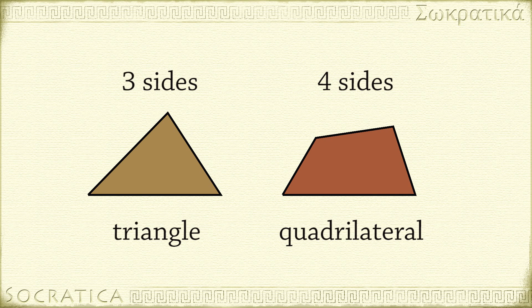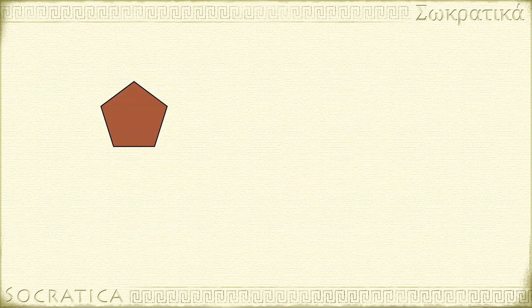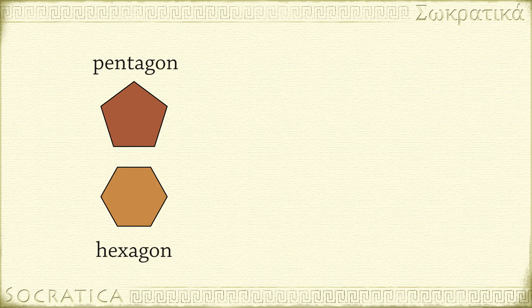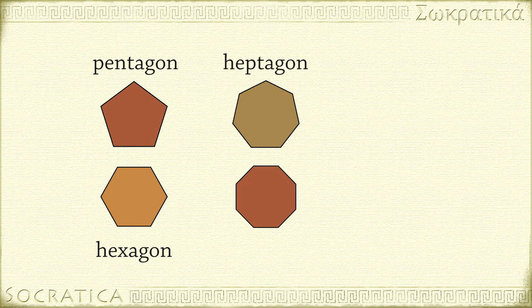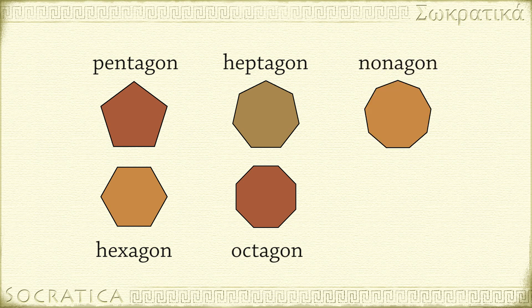When a polygon has five or more sides, the names follow a simple pattern. A five-sided polygon is called a pentagon. A six-sided polygon is called a hexagon. A seven-sided polygon is called a heptagon. An eight-sided polygon is called an octagon. A nine-sided polygon is called a nonagon. A ten-sided polygon is called a decagon.